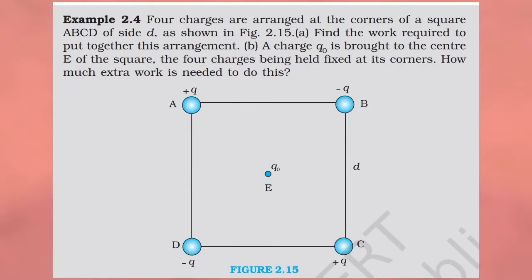Example 2.4. Four charges are arranged at the corners of the square ABCD of side d, as shown in the figure. First, find the work required to put together this arrangement. Second, a charge Q0 is brought to the center E of the square, with the four charges held fixed at the corners. How much extra work is needed to do this?